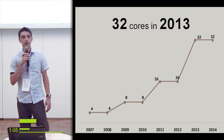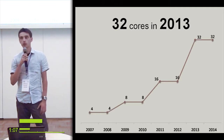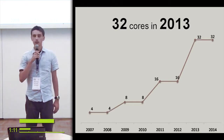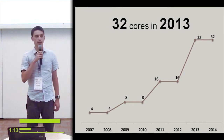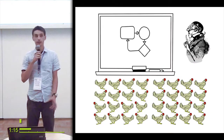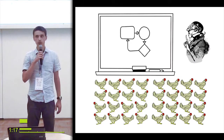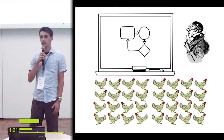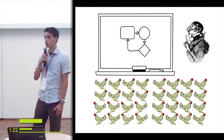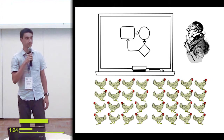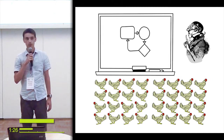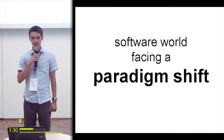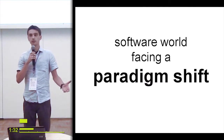In two years' time, processors will have 32 cores. So what's the problem? Try to imagine that those 32 cores are like 32 chickens running around. Did you ever try to orchestrate 32 chickens and make them do what you want? It's very hard — and those are the reasons why we programmers need to change the way we program computers.